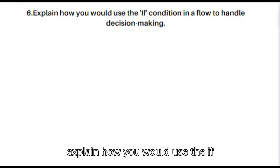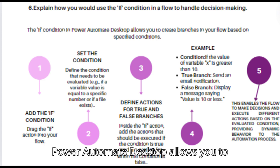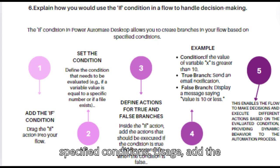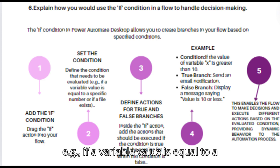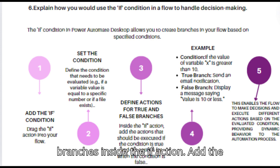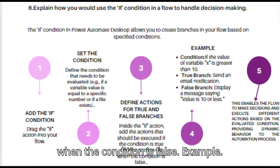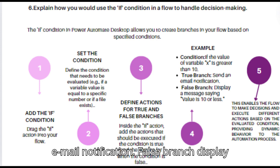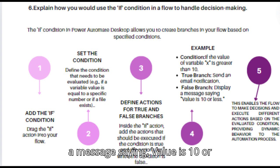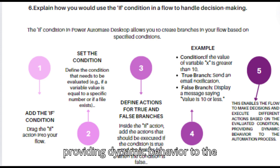Question 6: Explain how you would use the if condition in a flow to handle decision making. The if condition in Power Automate Desktop allows you to create branches in your flow based on specified conditions. Add the if action into your flow, set the condition to be evaluated (e.g., if a variable value equals a specific number or if a file exists), then define actions for true and false branches. Example: if the value of variable x is greater than 10, the true branch sends an email notification; the false branch displays a message saying value is 10 or less. This enables the flow to make decisions and execute different actions based on the evaluated condition.